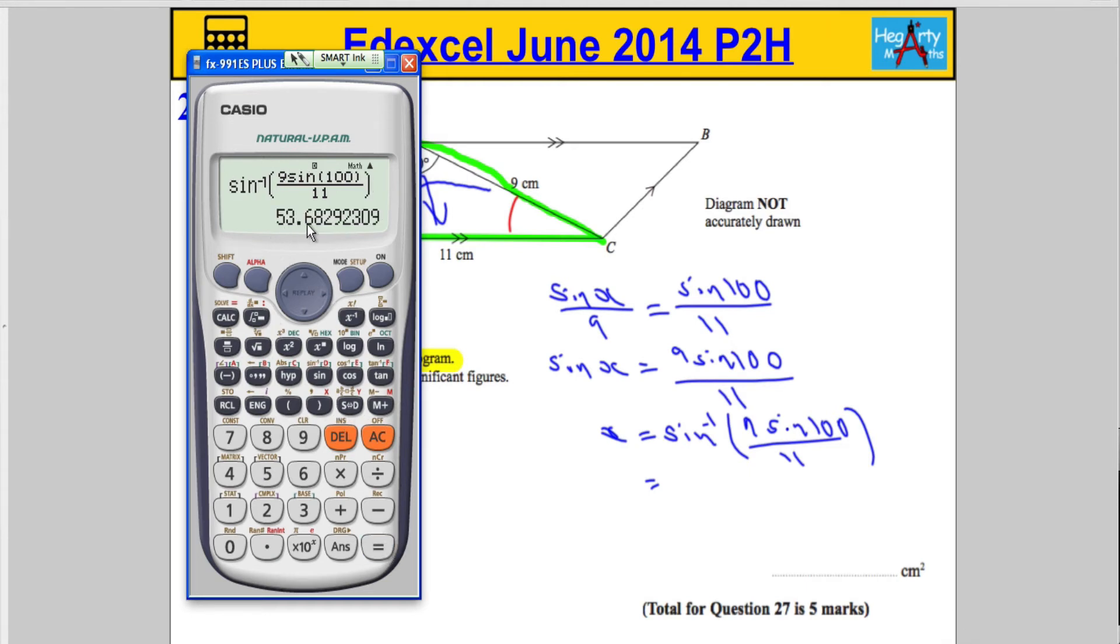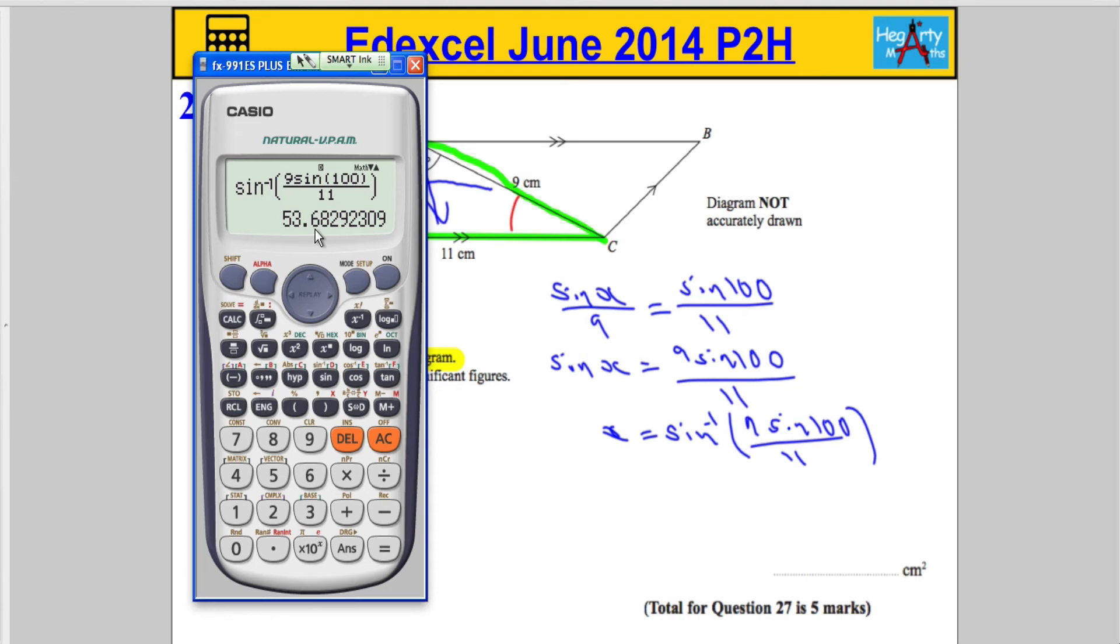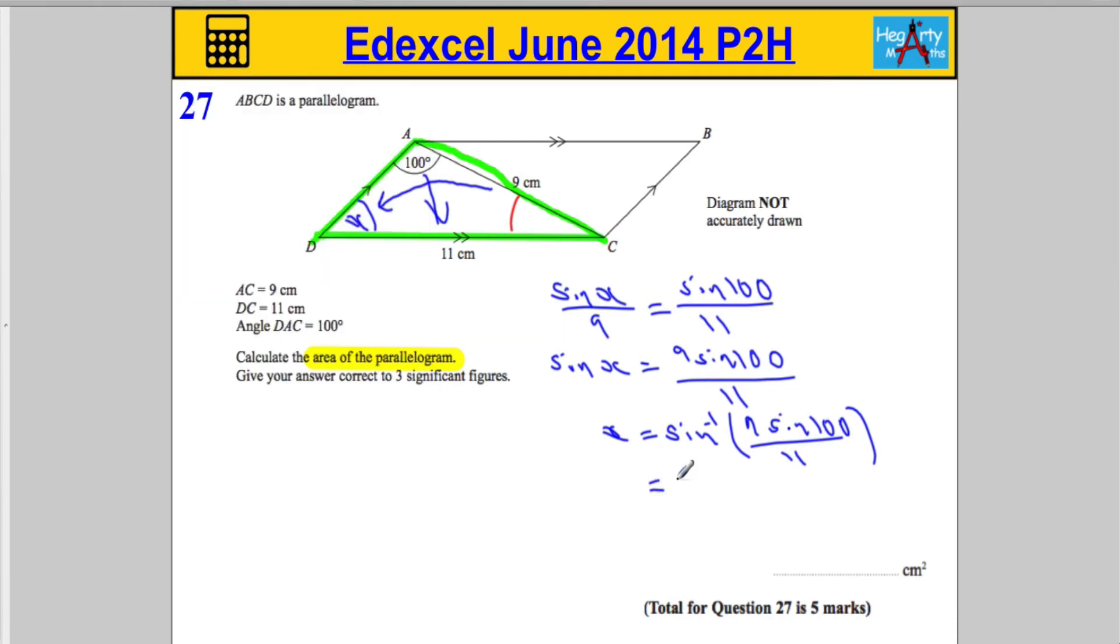and we get 53.6829, etc. So, we'll take the 53.6829. Let's take it to two decimal places, 53.68. So, we don't want to lose too much accuracy, 53.68.